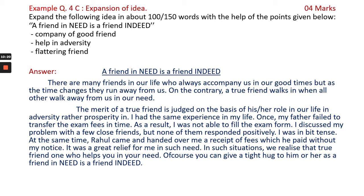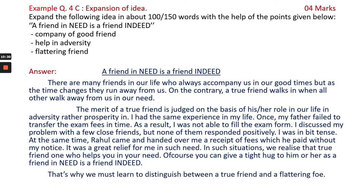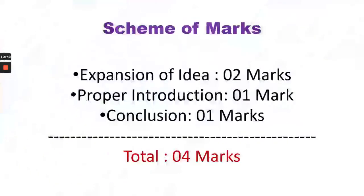In this way we have covered all the essentials of core content. Now we should end this expansion by summing up: 'That's why we must learn to distinguish between a true friend and a flattering foe.' Here is the scheme of marks: for appropriate expansion of idea — 2 marks; for proper introduction — 1 mark; and for right conclusion — 1 mark. In this way we can get all four marks.